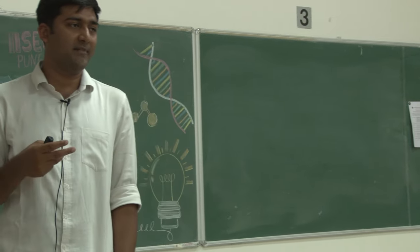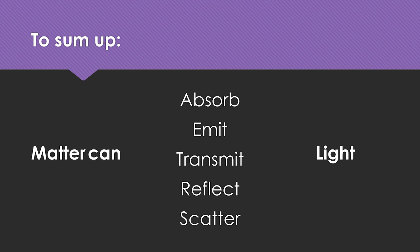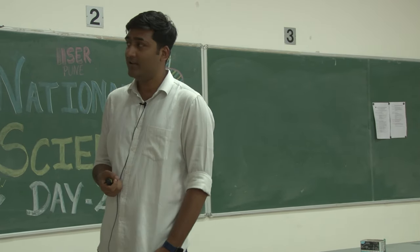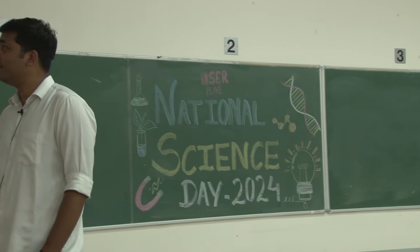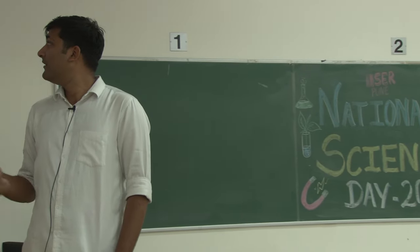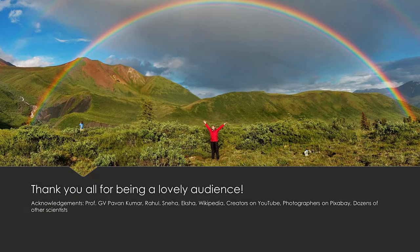So yeah, this is it. Matter can absorb light. Matter can emit light. Matter can transmit light, reflect light. Matter can also scatter light. And this is all the light-matter interaction that exists. This is it. Thank you everyone.